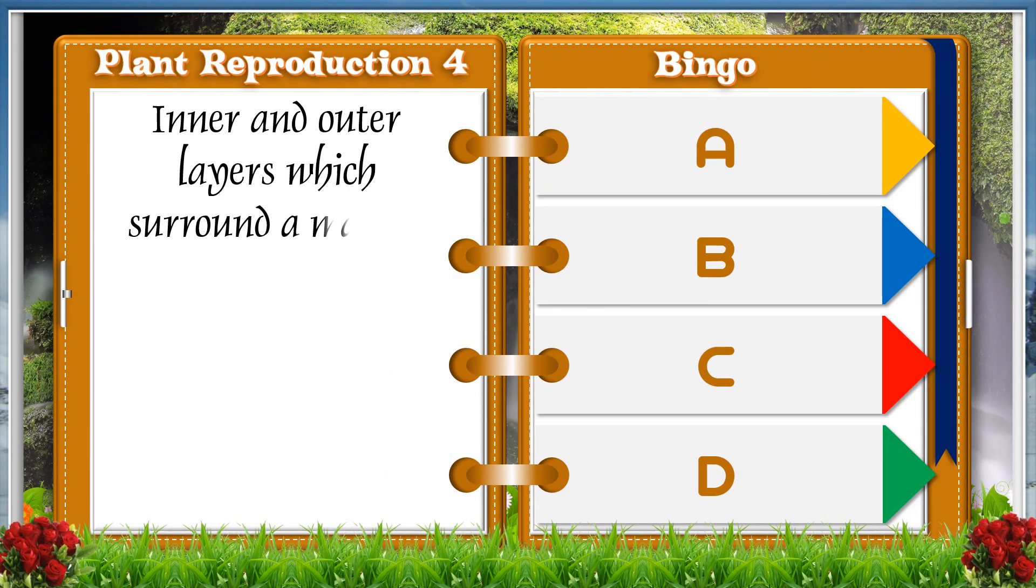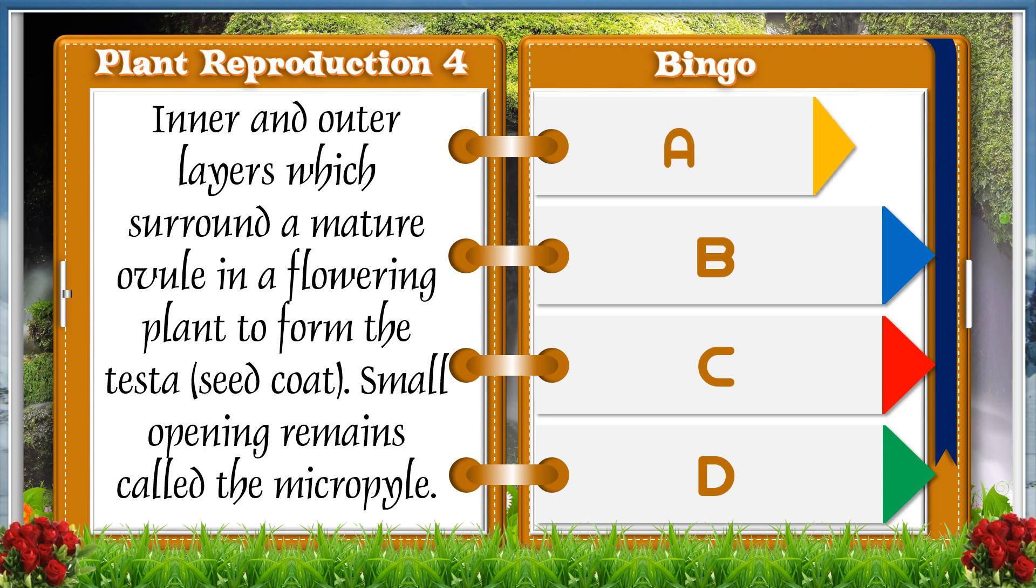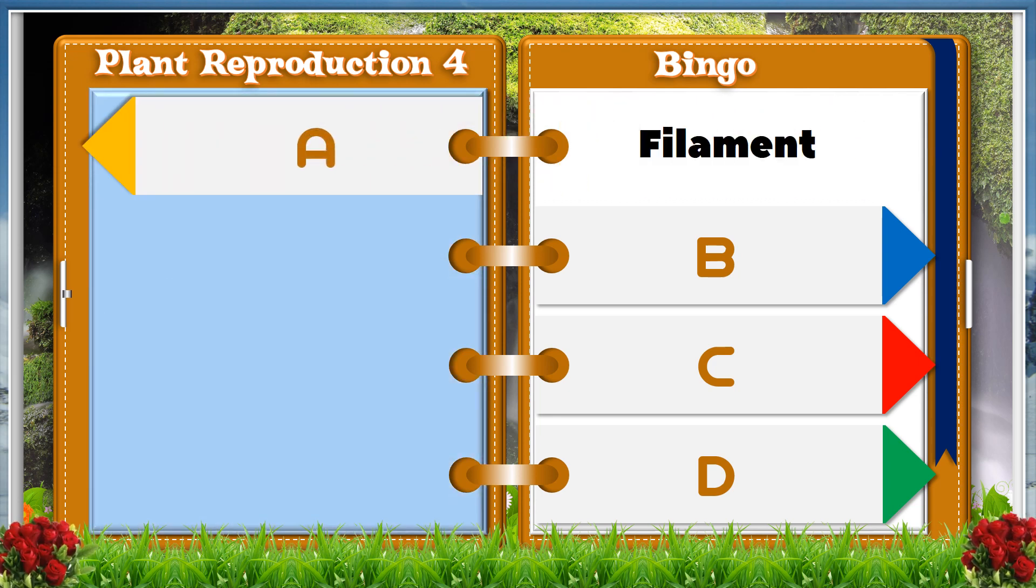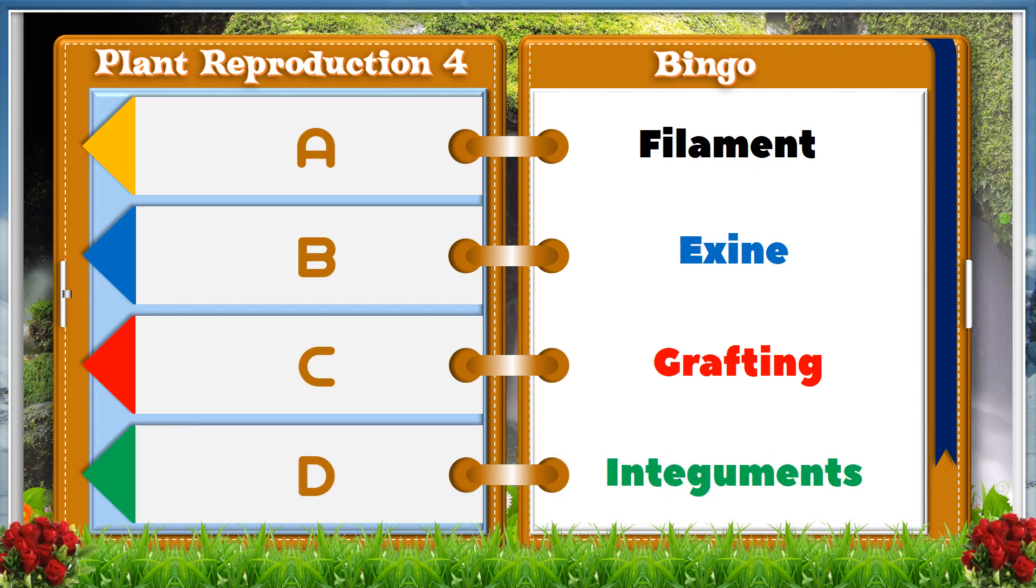Inner and outer layers which surround a mature ovule in a flowering plant to form the testa or seed coat. Small opening remains called the micropyle. A. Filament. B. Exine. C. Grafting. D. Integument. And the answer is D, Integument.